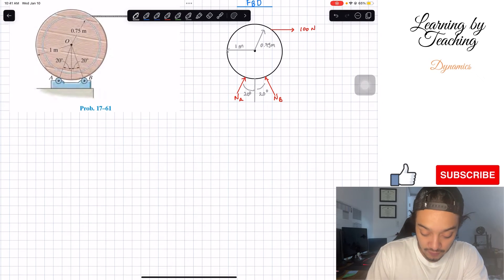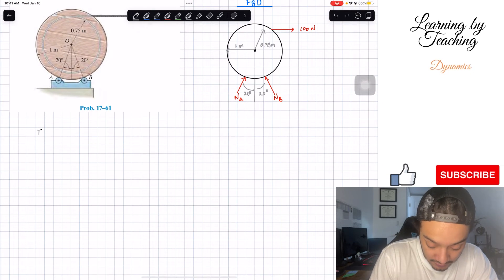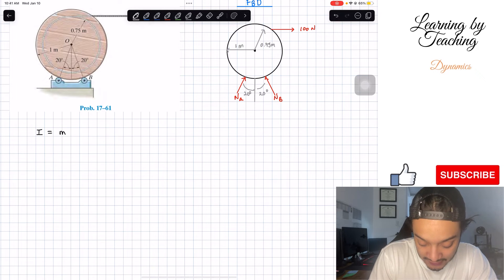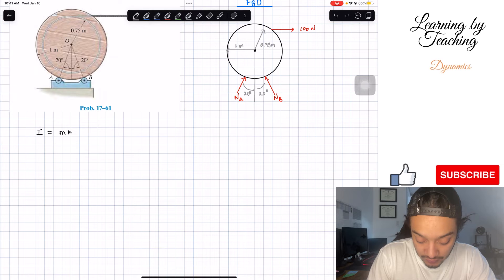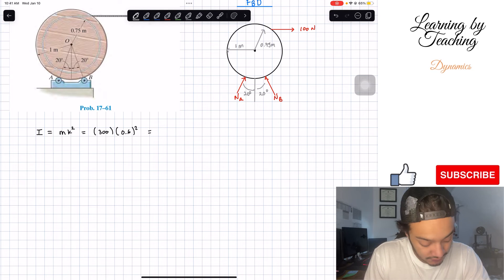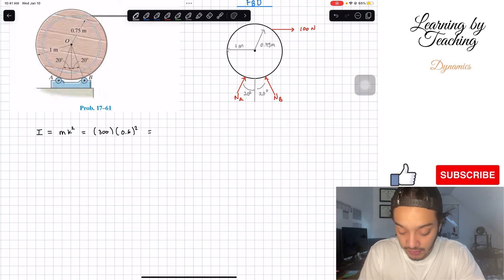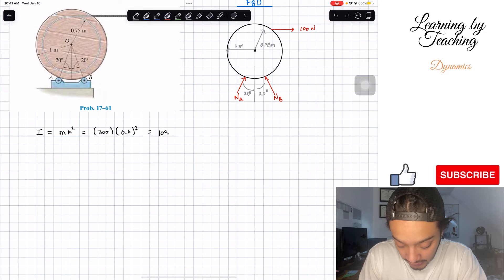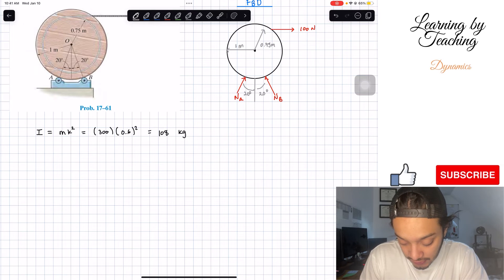We have that our moment of inertia is equal to our mass times our radius of gyration squared. If we plug our numbers in, we have 300 kilograms multiplied by 0.6 meters squared. This should be equal to 108, and the units should be kilograms times meters squared.